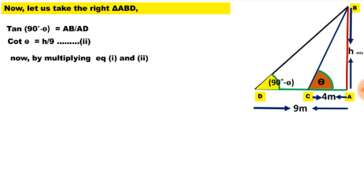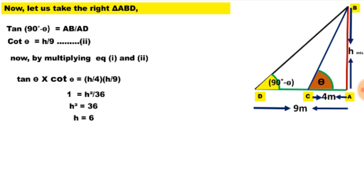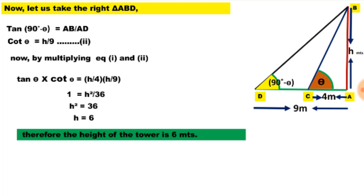By multiplying Equation 1 and Equation 2, we get tan theta multiplied by cot theta equals H over 4 times H over 9. Since tan theta and cot theta are multiplicative inverses of each other, their product is 1. So we get 1 equals H squared divided by 36, which gives H equals 6 meters. Therefore, the height of the tower is 6 meters.